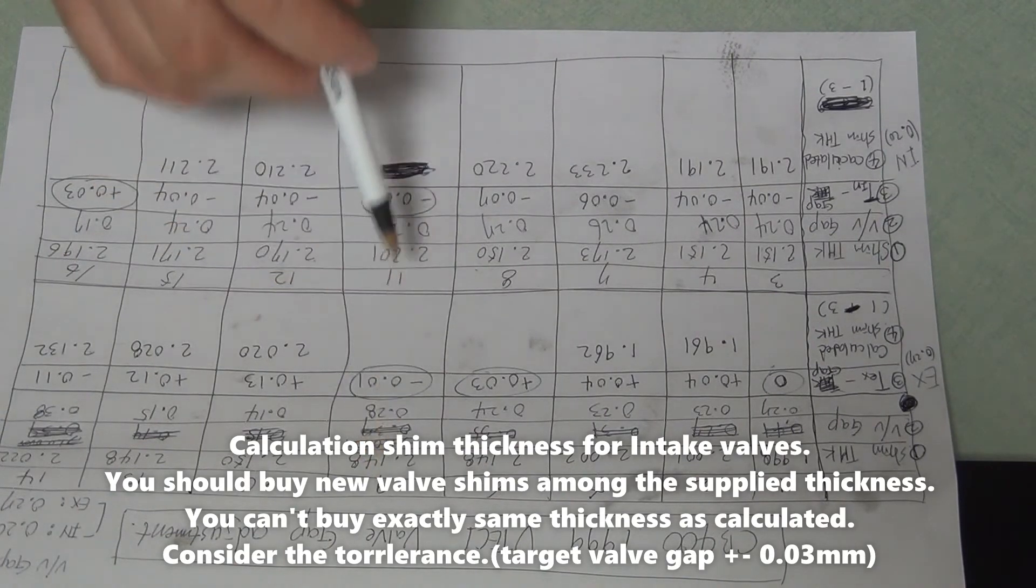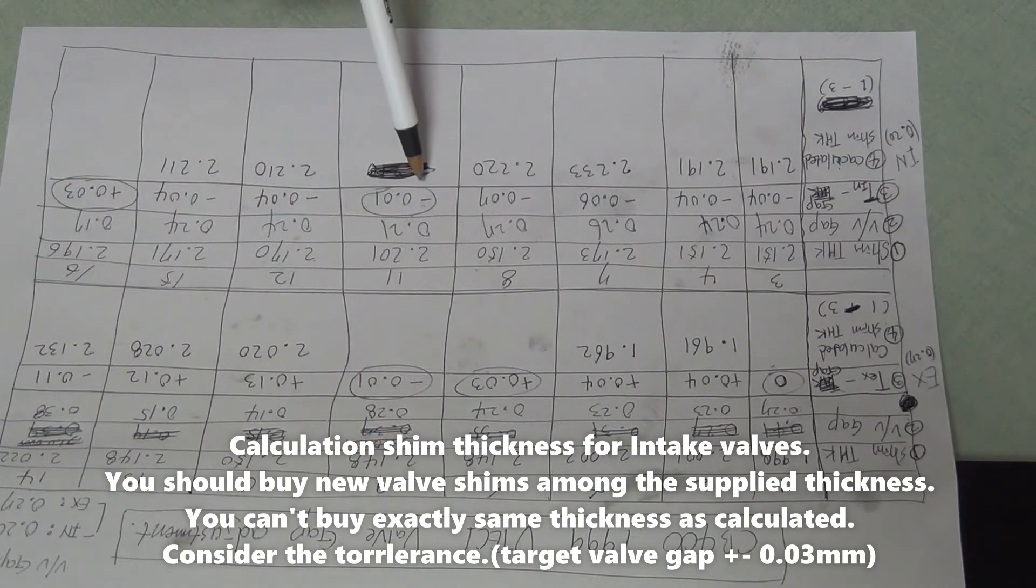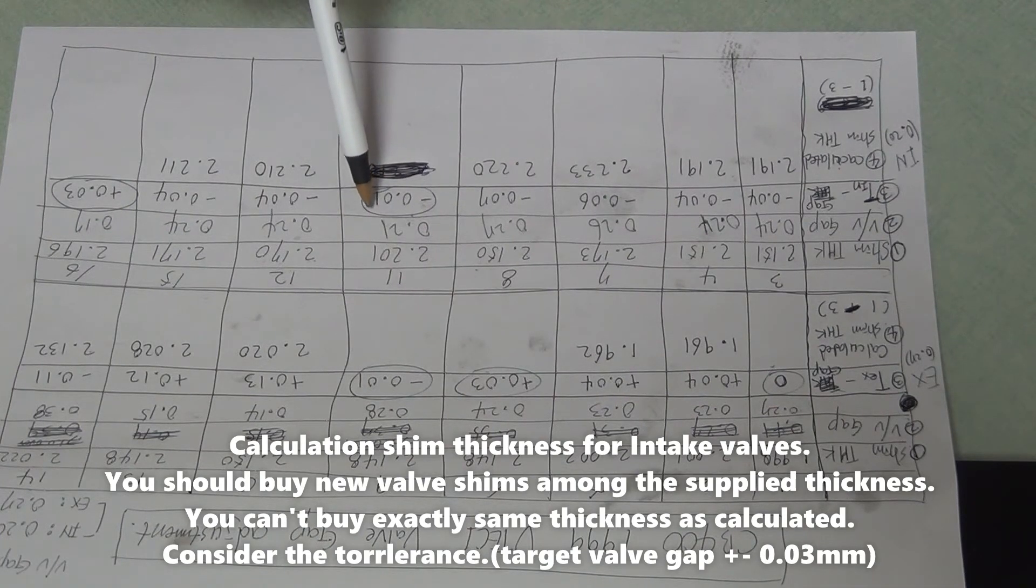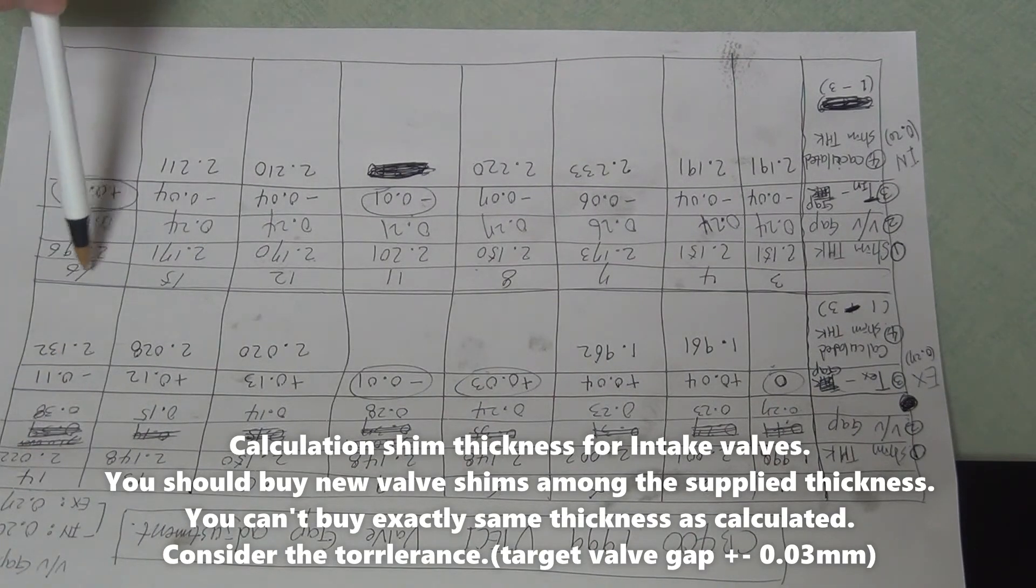So this number 9, number 11, minus 0.04, minus 0.01 is okay, there is no need to change. And number 16 plus 0.03 is also no need to change.